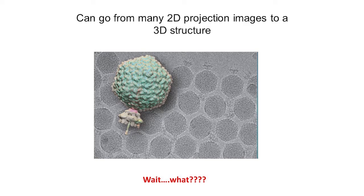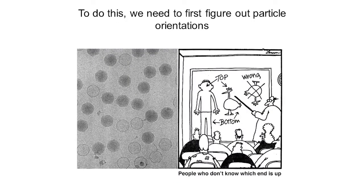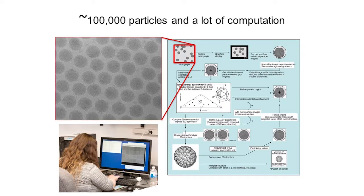In any one given image we have them all in different directions, and then we can go from a two-dimensional picture to a three-dimensional picture. That sounds a little strange — how do we do that? We have to apply mathematics and algorithms to figure out which way the particle is facing, whether or not they're up or down. We do that through a series of downstream computational steps. I'm not going to go through all of this — everyone can breathe a sigh of relief — but this is the sort of pipeline we use to look at these particles.